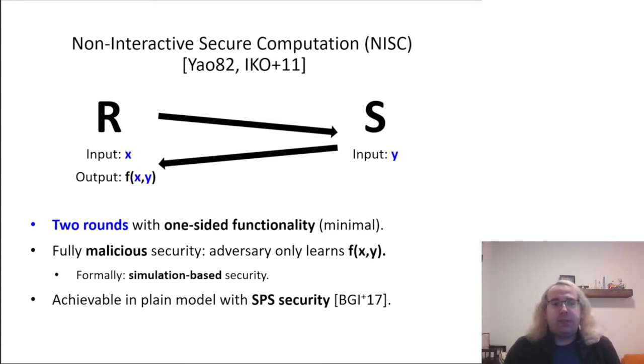In fact, NISC with malicious security in the plain model is well known from standard assumptions, though we note that a relaxation to superpolynomial time simulation is required to circumvent a classical impossibility result and achieve security with fewer than four rounds.